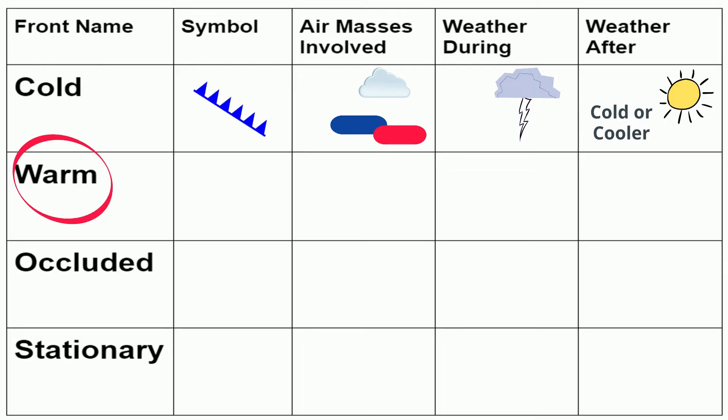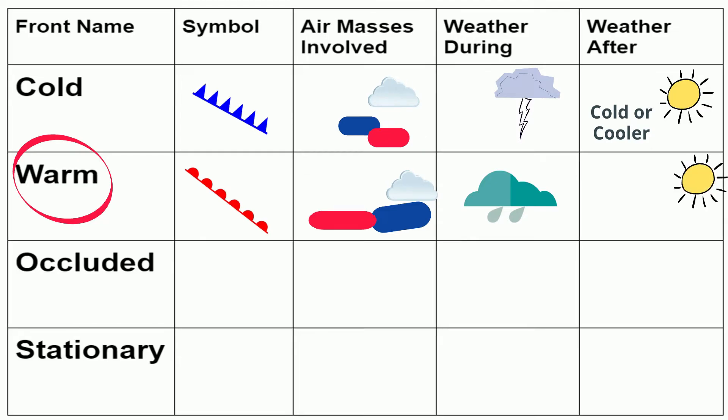Next is a warm front and here's the symbol. A warm front occurs when a warm mass of air will slowly rise above cooler or cold air. The weather along a warm front is generally cloudy weather and rain. However if the air is very unstable you may get a thunderstorm. As the warm front passes you will see warmer more humid air.